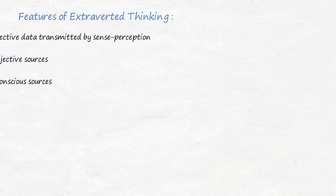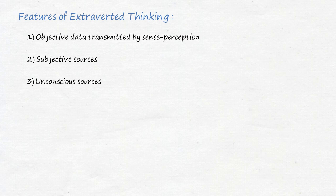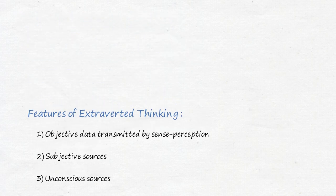The extroverted thinking function features three major components that influence extroverted thought production: objective data transmitted by sense perception, subjective sources, and unconscious sources. For the extrovert, the criterion by which he judges things is supplied by external conditions.